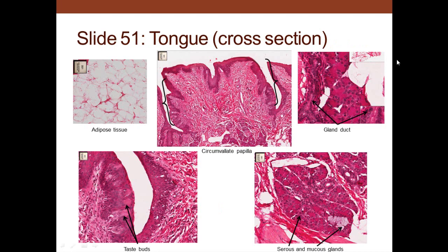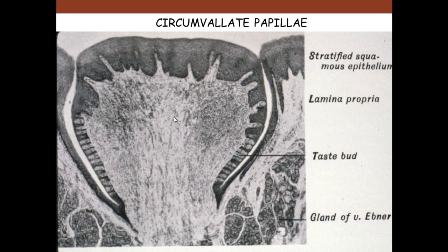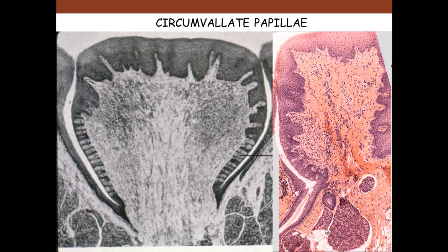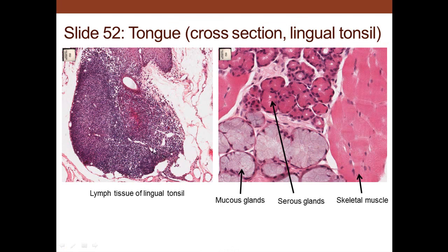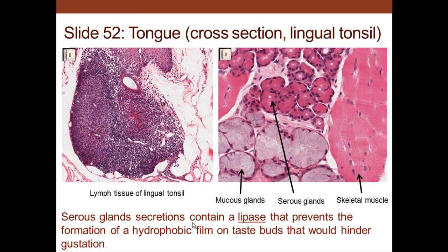We can also see adipose tissue and glandular tissue with serous and mucous type glands. In the circumvallate papillae, the glands of Ebner — a serous-type secretion — wash out the taste receptor area. We can see the taste buds on the periphery and the glands of Ebner located there. There is also lymphoid tissue — tonsils — in the oral cavity. The serous gland secretion contains a lipase that prevents formation of a hydrophobic film on the taste buds, which would hinder tasting.